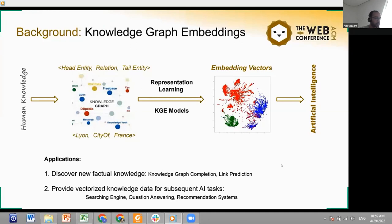Knowledge graph embeddings aims to represent entities and relations in the knowledge graph as continuous vectors in a low-dimensional vector space. Compared with symbolic triples, these learned embedding vectors can be easily processed by machines and can be utilized to discover new factual knowledge or provide knowledge data to other AI tasks.